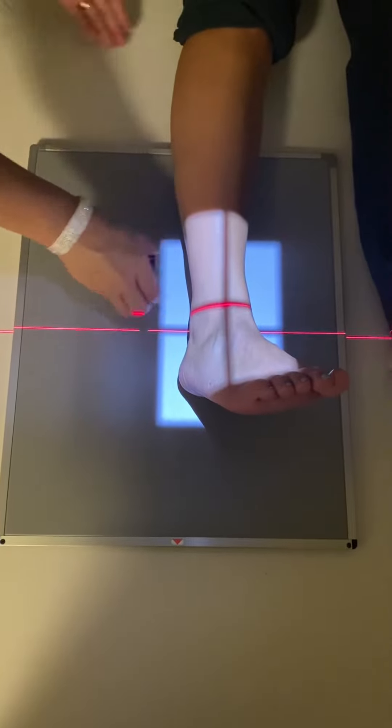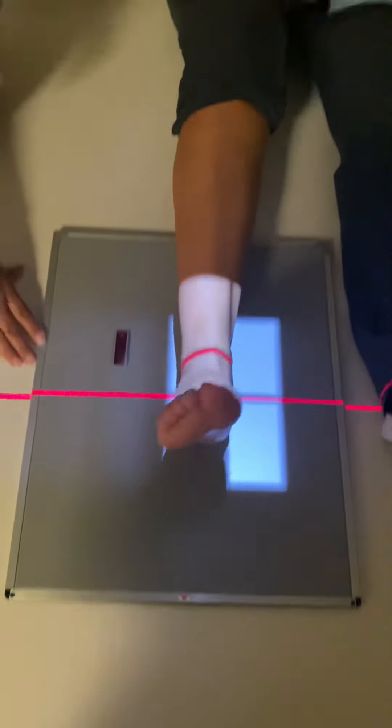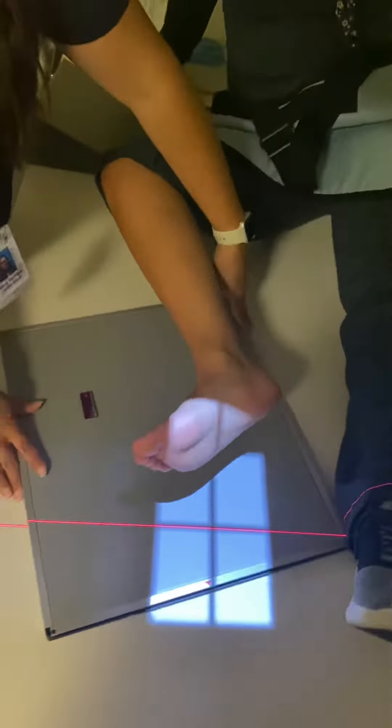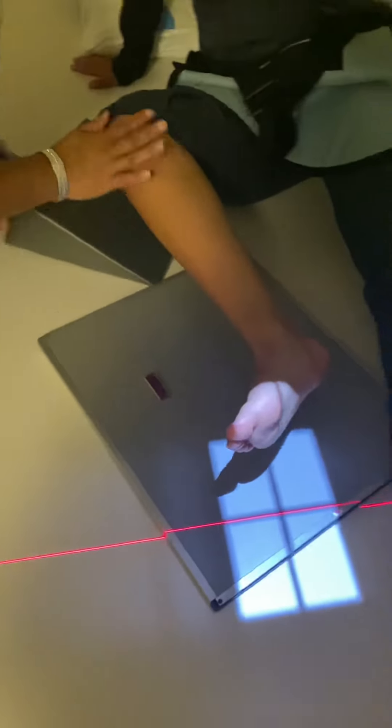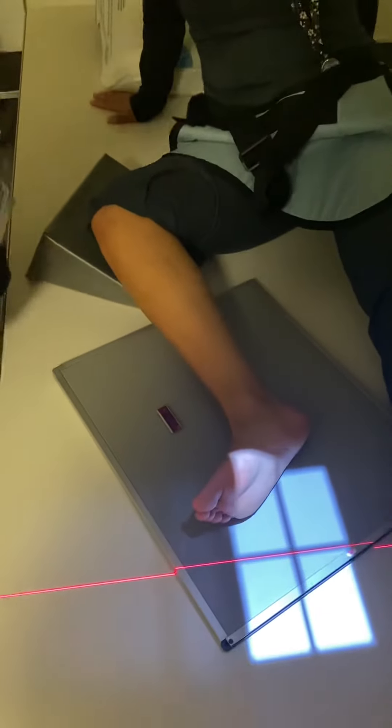Then for the lateral view, you're going to have your patient bend your knee up and then roll your leg out to the side towards me. I'm going to put a sponge underneath the knee again so that they don't over-rotate.